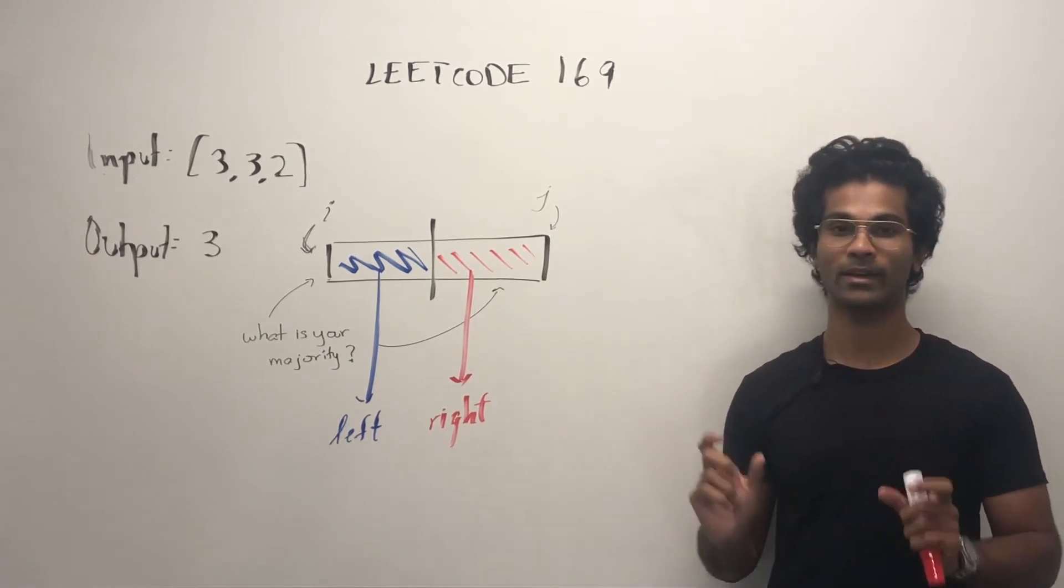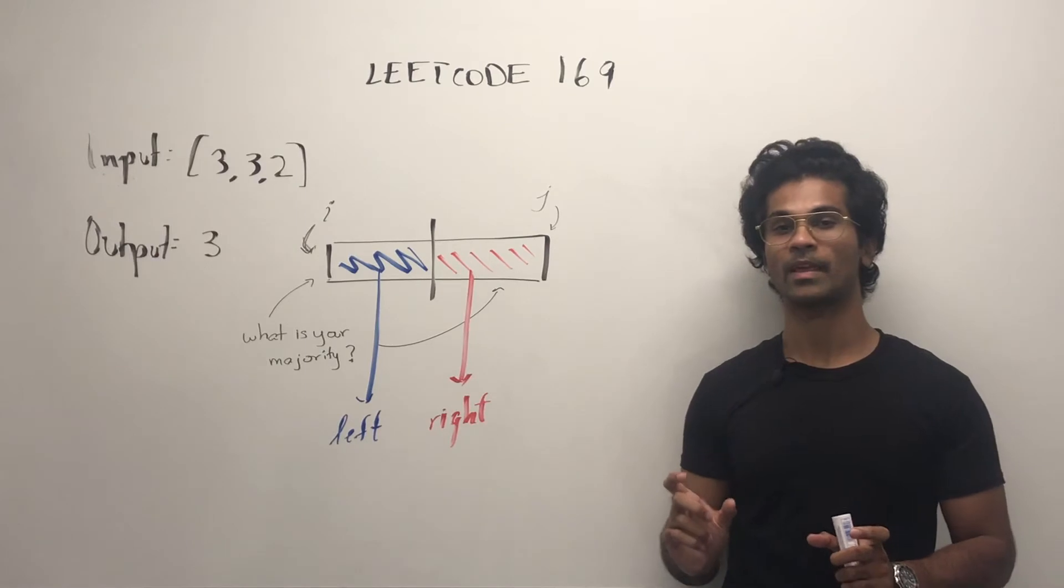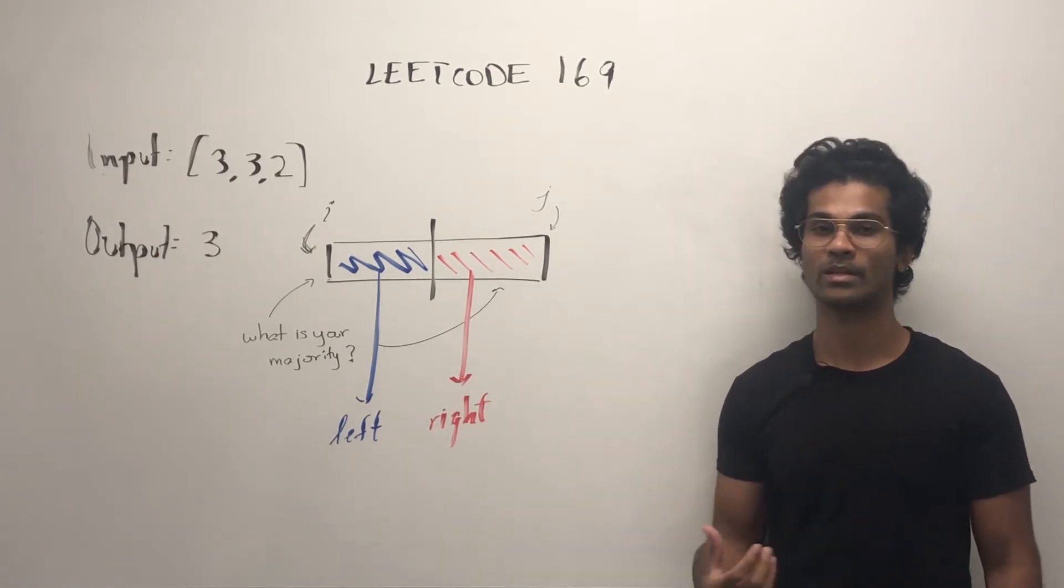It's going to calculate how many times five showed up, and we'll take both of their counts and compare. Whichever number is the higher count, that's going to be the majority element.